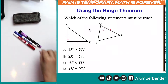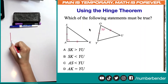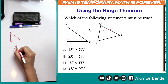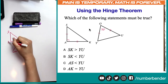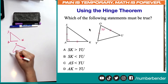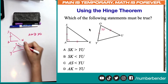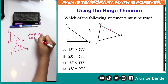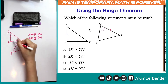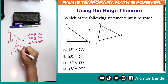Whenever we encounter a problem like this, it's always easier to visualize and answer by drawing our triangles and putting in our markings based on the given information. So here we have triangle SAK and triangle OYU. We know that SA is congruent to YO, and AK is congruent to OU. We also know that angle A is equal to 90 degrees and angle O is 70 degrees.